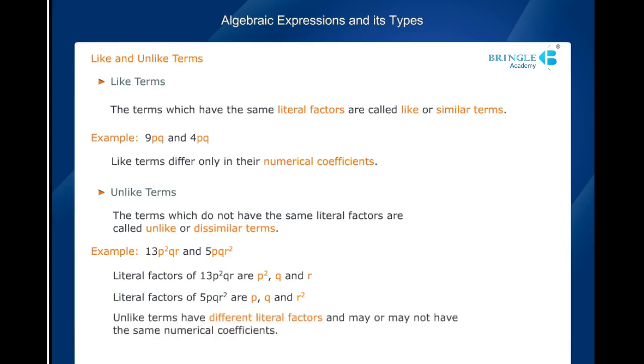Unlike terms have different literal factors and may or may not have the same numerical coefficients. 3a, 4p, 6a³, 3p³, 4pq are all unlike terms.